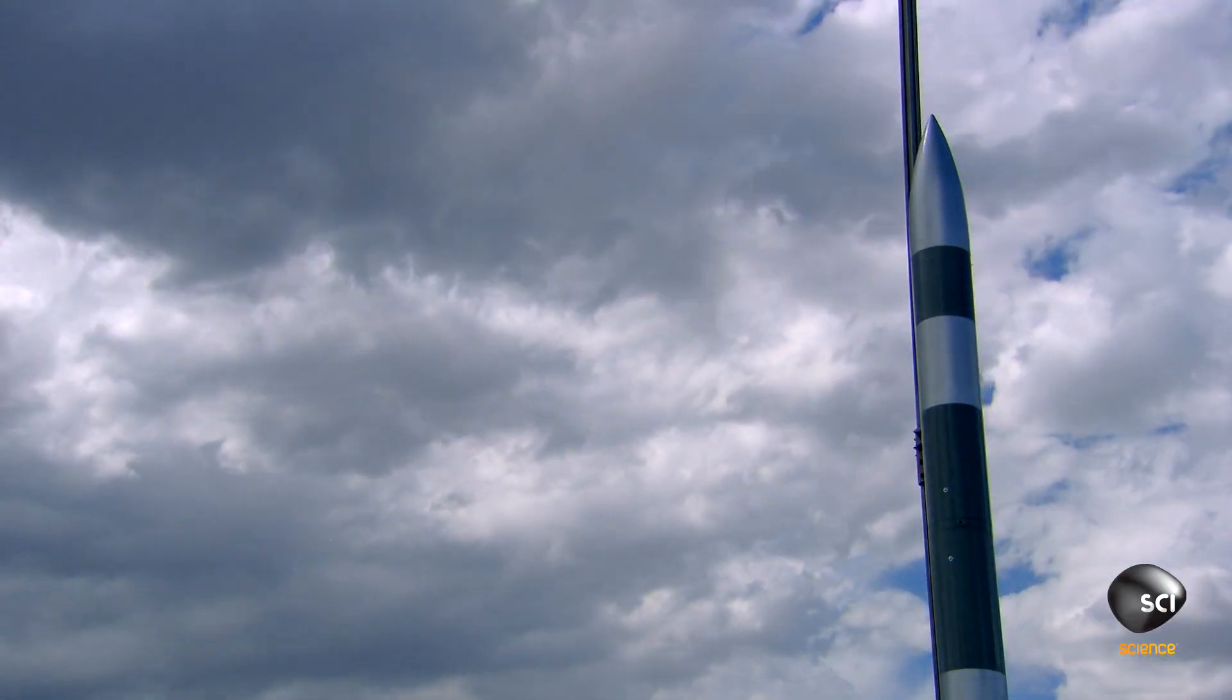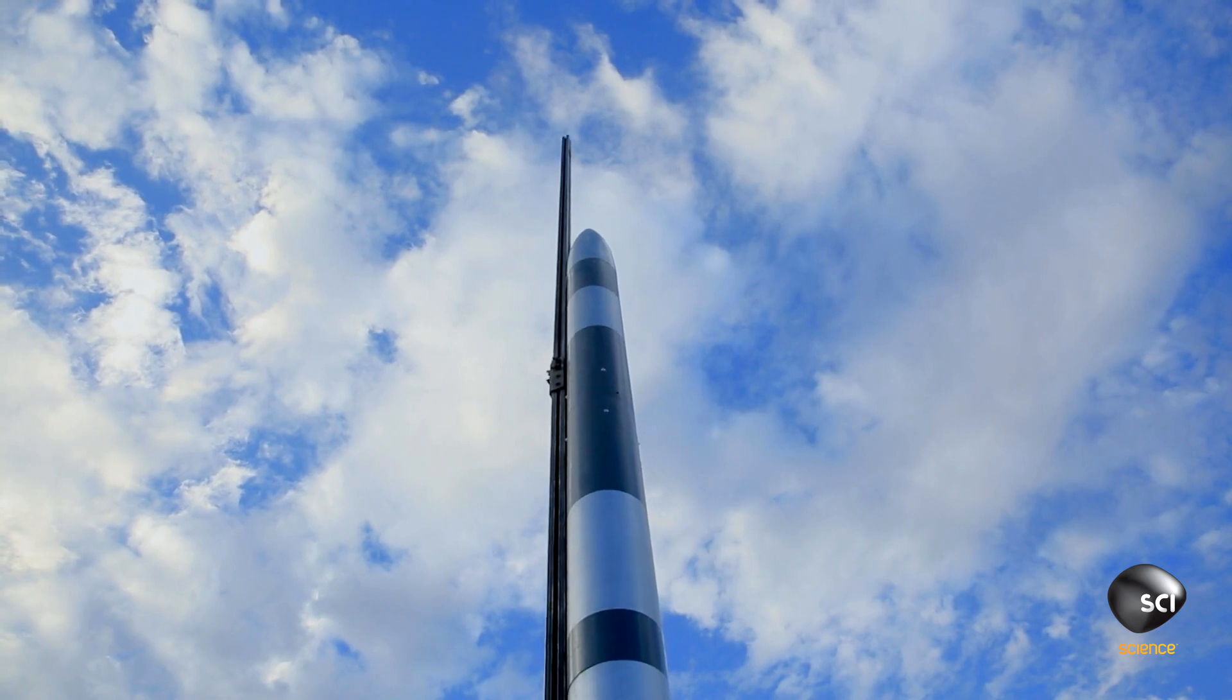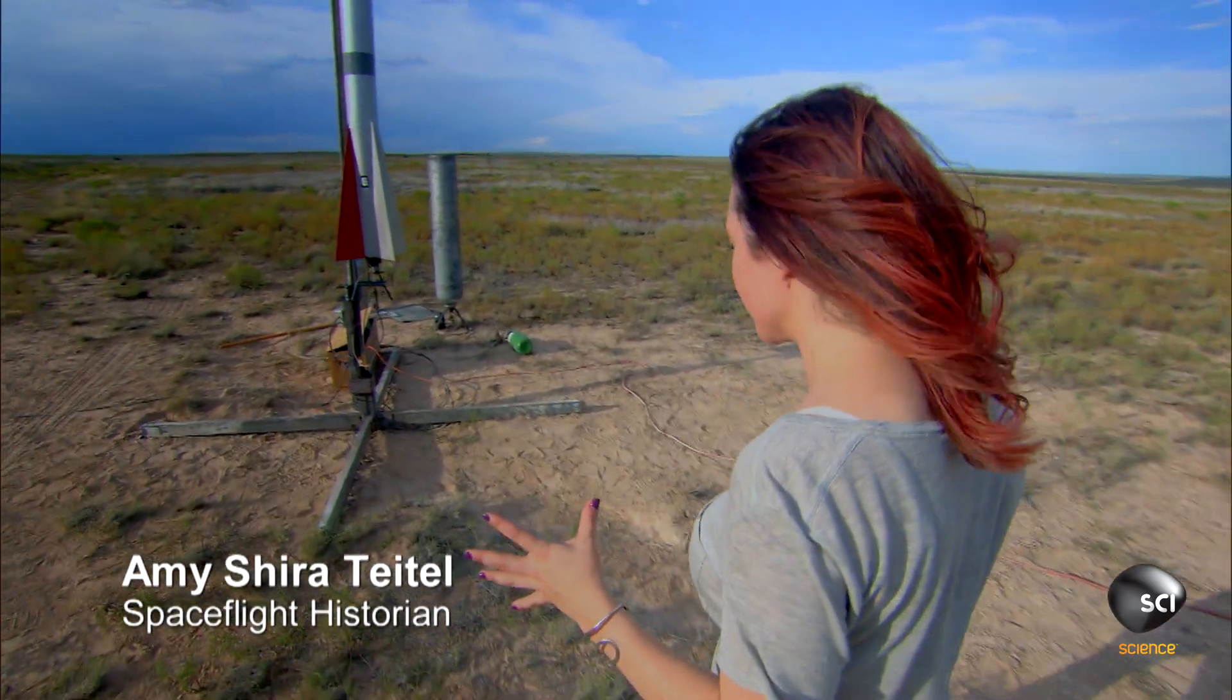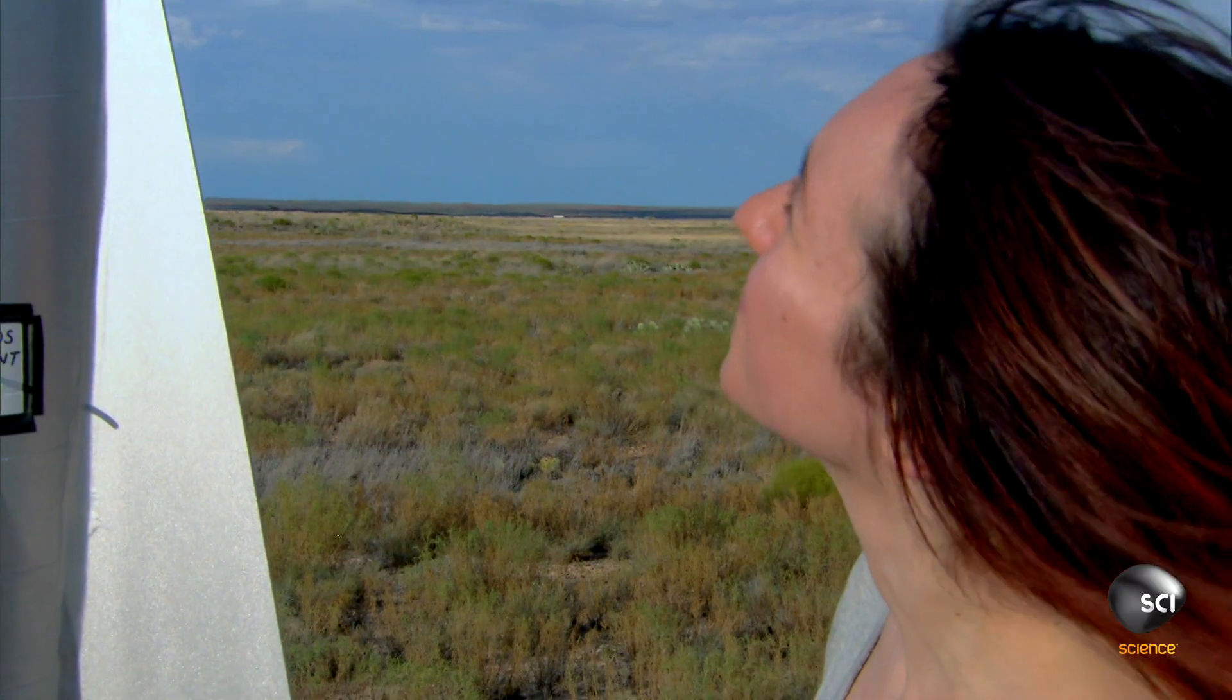This rocket is a replica of the A-5 built by rocket pioneer Robert Goddard in 1935. And it was in this desert landscape, away from populated areas, that Goddard was first able to fire his rockets to really show how powerful they were.